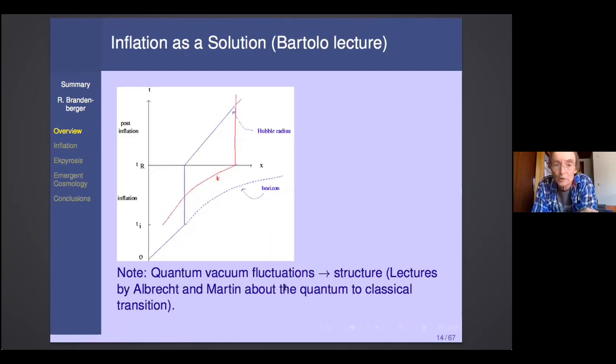Inflation is indeed one scenario which satisfies all these criteria. We have an early phase of exponential expansion. Scales that we observe today start out inside the Hubble radius. The horizon becomes exponentially larger than the Hubble radius, because the Hubble radius is constant during inflation. And the fact that you have constant energy density during inflation, that is the physics that guarantees that you get a scaling spectrum.